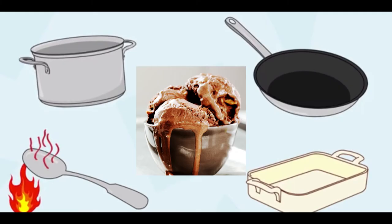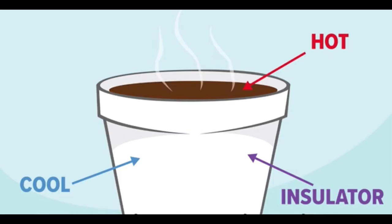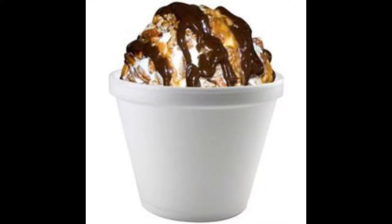Conductors transfer heat easily. Like, if we had a metal bowl, then that would warm up the ice cream faster. Insulators do not transfer heat easily, like this picture of a styrofoam cup preventing the hot cocoa from transferring its heat to you so it doesn't burn your hand — it's keeping the heat from coming out. The same idea can be used with ice cream. If we had a styrofoam bowl, it would help by not transferring the heat from your hands into the ice cream. But I don't have any styrofoam bowls at home, and even if I did, the ice cream would still be exposed to the air and heat can still transfer into the ice cream through the air.